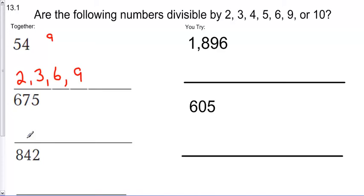Alright, on to 675. Is it divisible by 2? No. Now this brings up a good point. 675 is an odd number. So when I find an odd number, I don't need to mess with 2, 4, 6, or 10. Why? Because when I count by even numbers, I only ever say even numbers.